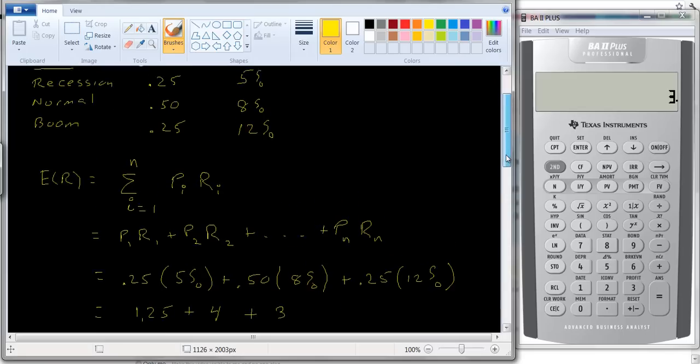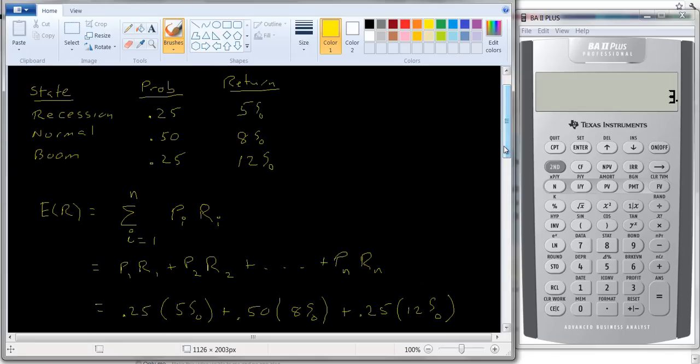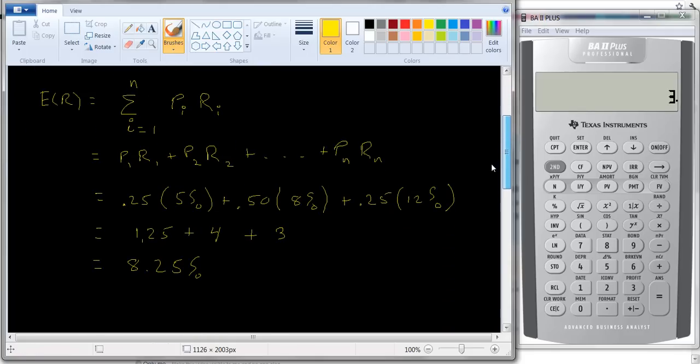If you look at it, ask yourself whether the answer makes sense. The answer can't be lower than 5% because that's the worst case scenario, nor can it be greater than 12%, which is the best case scenario. So it has to be between 5 and 12. 8 is 3 bigger than 5, and 12 is 4 bigger than 8, so it should be a little bit bigger than 8%. It's not quite symmetric around the 8%, so that looks good. That's a reasonable number.